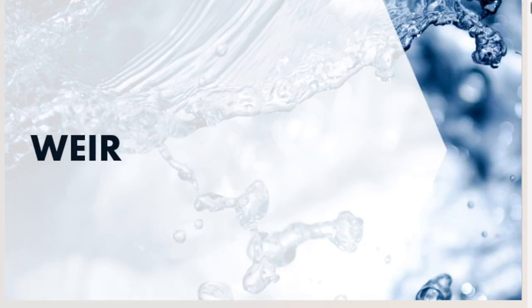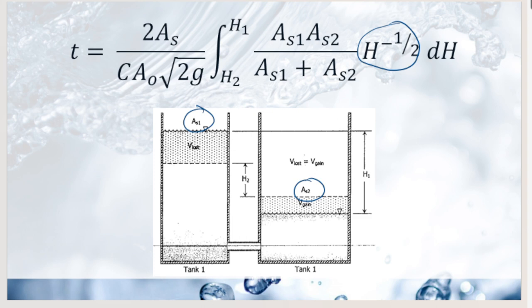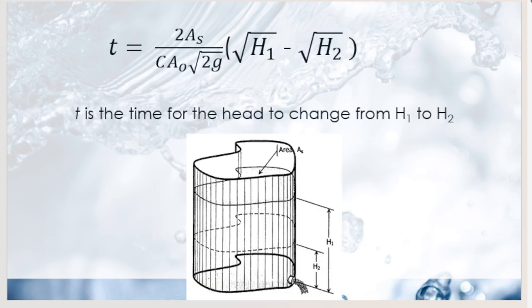Now let's discuss the terms encountered with weirs, using the illustration of a rectangular sharp-crested weir. The nappe is the overflowing stream of the weir. The crest of the weir is the edge or top surface where the flowing liquid comes in contact. A contracted weir has sharp side edges so the nappe is contracted in width, with one or two end contractions.